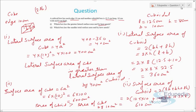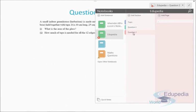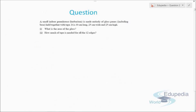Let's discuss question number two. A small indoor greenhouse is made entirely of glass panes including the base, held together with tape. It is 30 cm long, 25 cm wide, and 25 cm high. We need to find the area of the glass used.